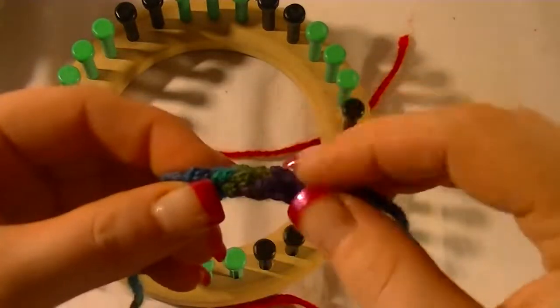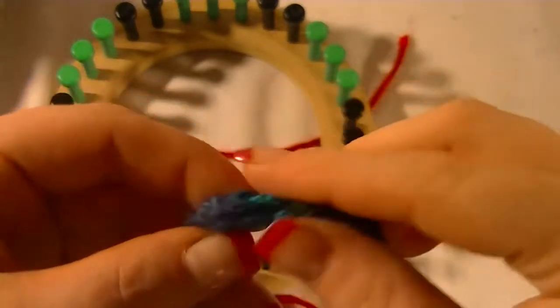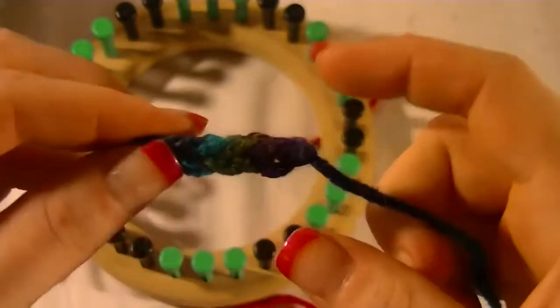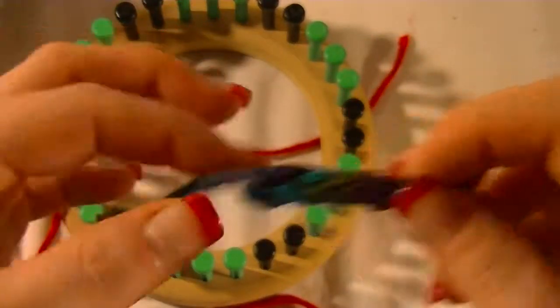You end up with a string on this end that you'll have to weave in and cut off, and then you'll end up with this end that you either have to put into your project. There'll be something you have to do with both of these ends.